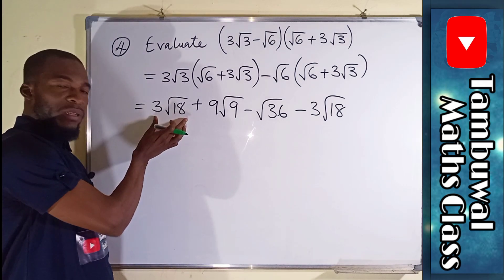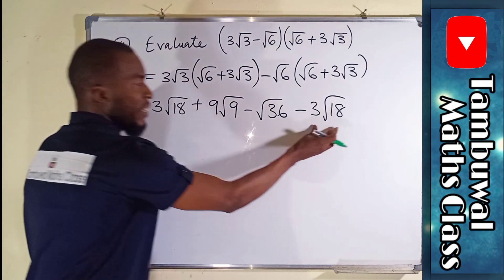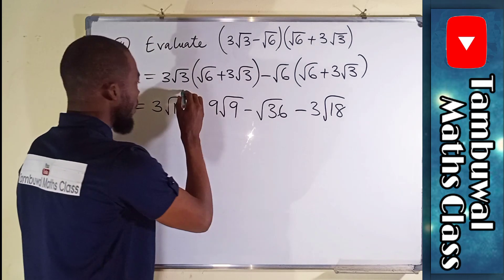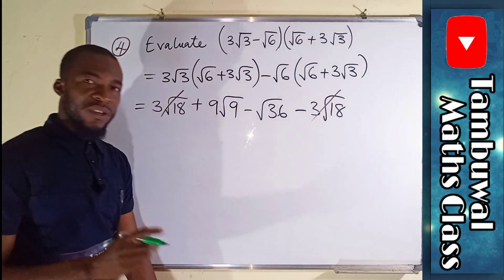You can see we have positive 3√18 and negative 3√18, so they will cancel out by subtraction.